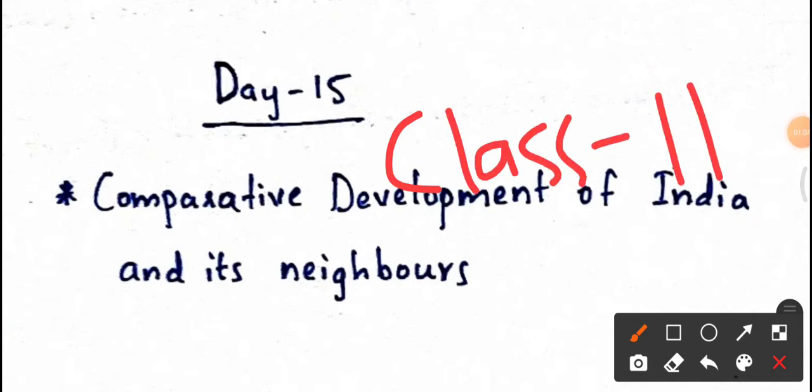We are going to talk about the comparative development of India. In Class 12, we are going to talk about micro economy and macro economy. It will be completed in 12 chapters.